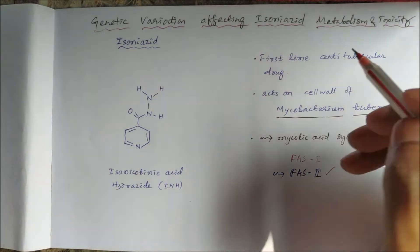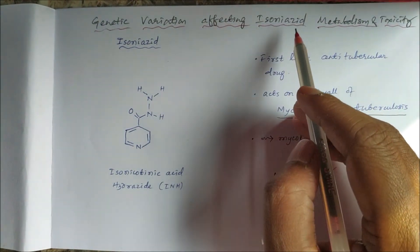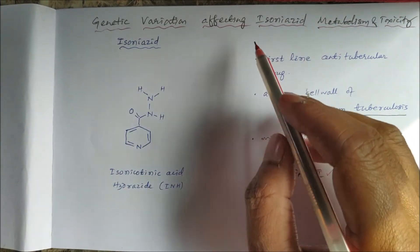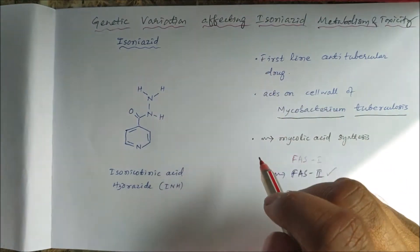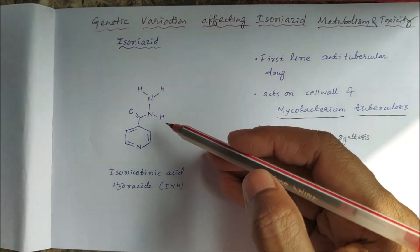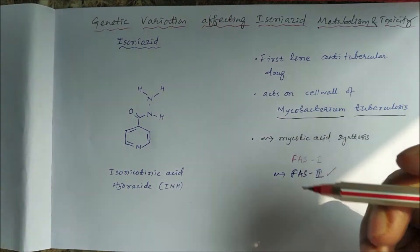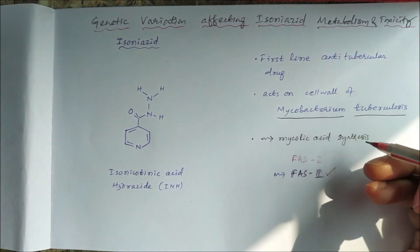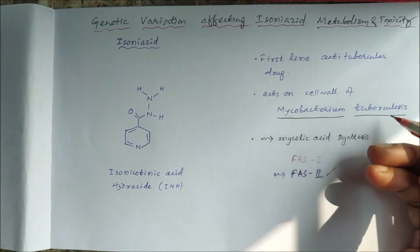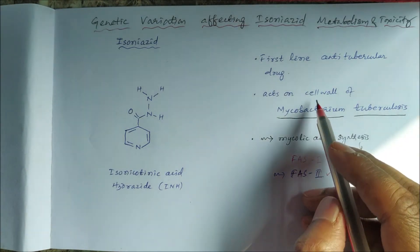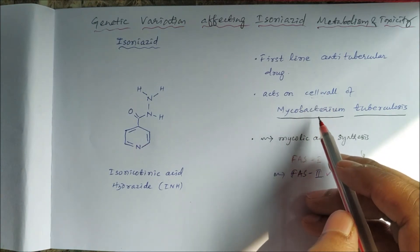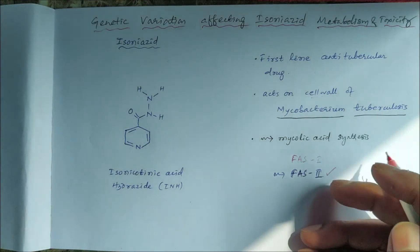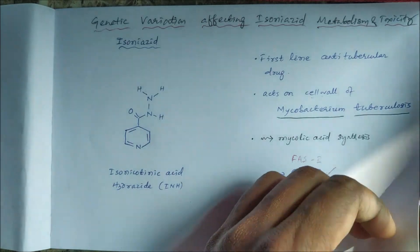Today we will study genetic variation affecting isoniazid metabolism and toxicity. Genetic variation affects the metabolism of isoniazid and hence its toxicity. This is the structure of isoniazid, which is isonicotinic acid hydrazide, in short called INH. It is a first-line anti-tubercular drug and acts on the cell wall of Mycobacterium tuberculosis, specifically inhibiting mycolic acid synthesis by inhibiting the fatty acid synthase type II enzyme system.